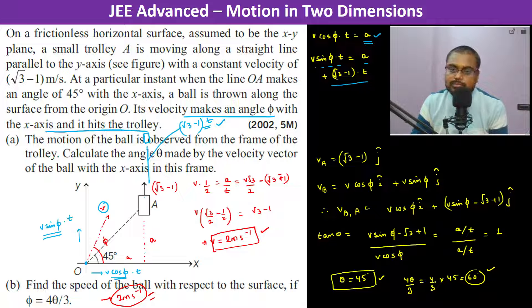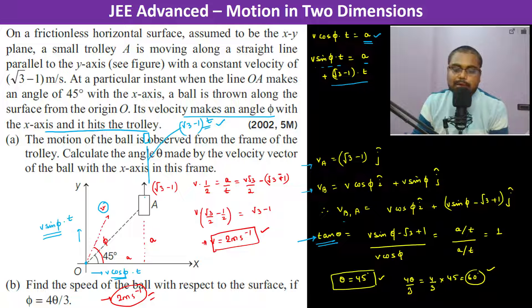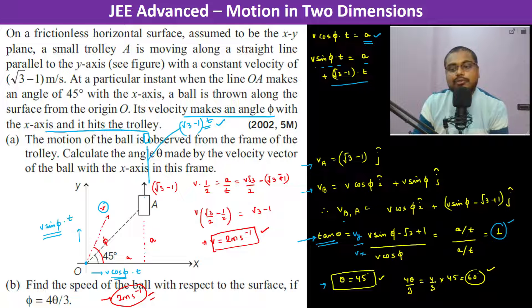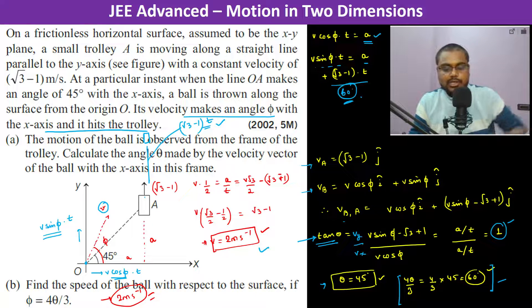From these two equations, we get tan θ as v_y/v_x = 1, so θ = 45 degrees. Then with φ = 4θ/3 = 60 degrees, we substitute into the equations and calculate v. The x-component gives v·cos60° = v/2, and solving yields v = 2 m/s.